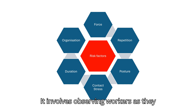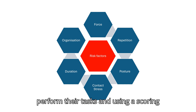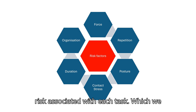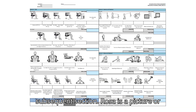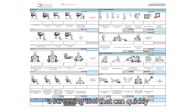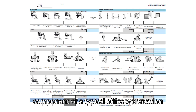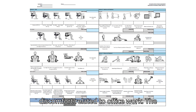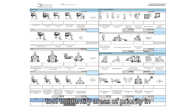ROSA involves observing workers as they perform their tasks and using a scoring system to quantify the level of ergonomic risk associated with each task. It is a pictographic checklist developed as a screening tool that can quickly quantify risks associated with each component of a typical office workstation, providing information regarding the need for change based on reports of discomfort. The goal of ROSA is to serve as a screening tool to identify areas of priority in large office-based organizations.